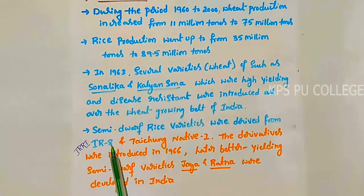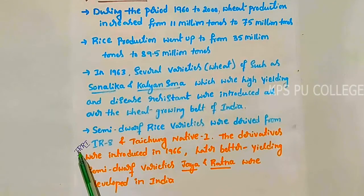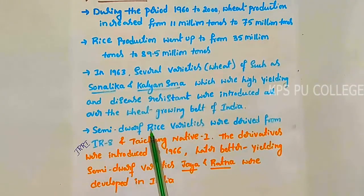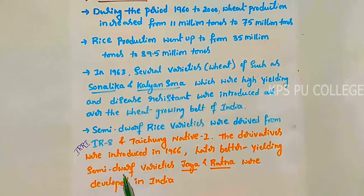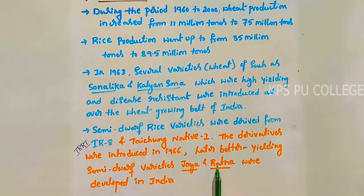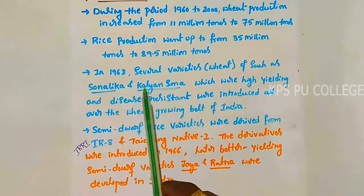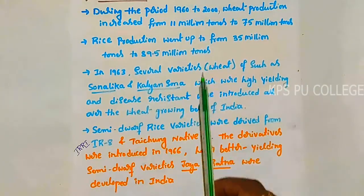IR-8 was developed at the International Rice Research Institute, and Taichung Native 1 from Taiwan. Semi-dwarf rice varieties were derived from IR-8 and Taichung Native 1, and were introduced in 1966. Later, better-yielding semi-dwarf varieties Jaya and Ratna were developed in India. Jaya and Ratna are notable rice varieties developed through this process.